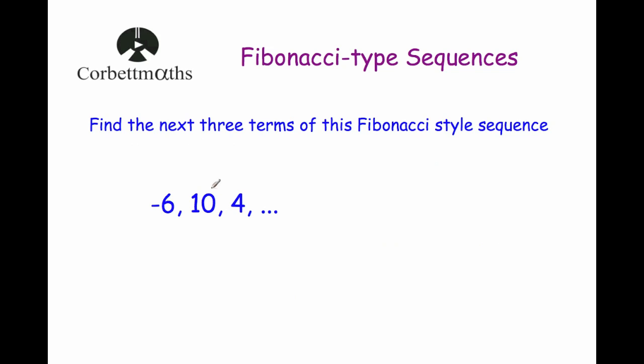Okay. Next question. Our next question says find the next three terms of this Fibonacci style sequence. So we've got negative six plus ten. So negative six plus ten is four. So then ten plus four is equal to fourteen. Four plus fourteen is equal to eighteen. And fourteen plus eighteen is equal to thirty-two. And so on.